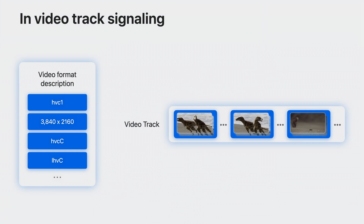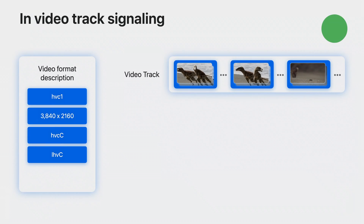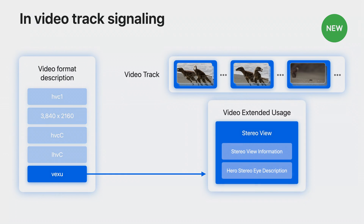The video format description, or the visual sample entry in MPEG-4, indicates the coding type, the codec, the dimensions of each view, and other details necessary to decode the video frames. A new extension to the video format description is introduced, termed the video extended usage box, or VEXU box. It serves as a lightweight, easily discoverable signal that the video is stereoscopic and which stereo eye views are present. For HLS delivery, this will be both left and right. A specification describing this new VEXU box is available with the SDK. Its structure will evolve, and that will be described in the specification.